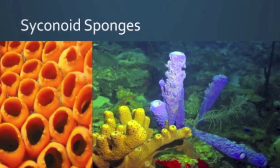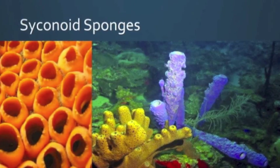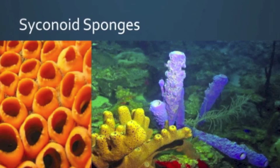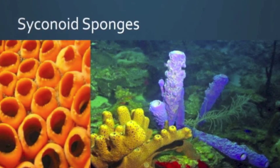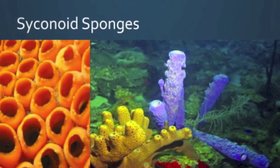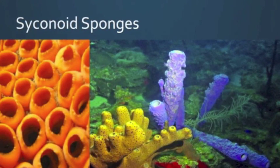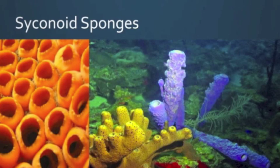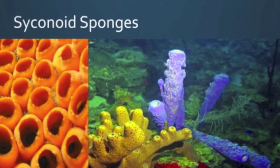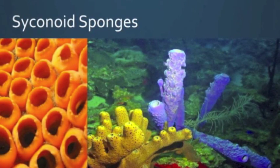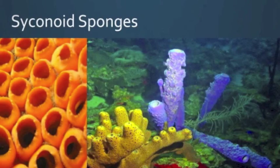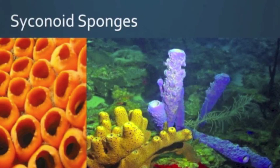Syconoid sponges represent the next level of complexity in sponge architecture. They are typically vase shaped, like the Asconoid sponges, and also have radial symmetry. These sponges are able to get bigger than Asconoid sponges.